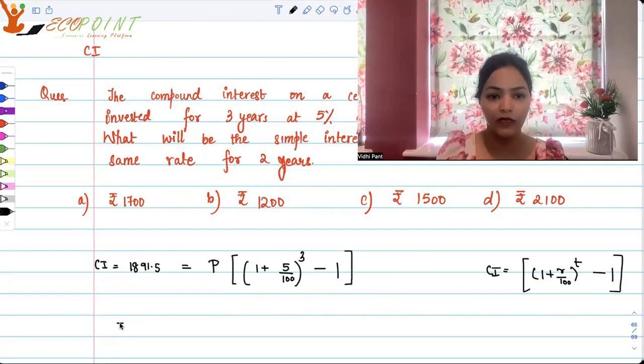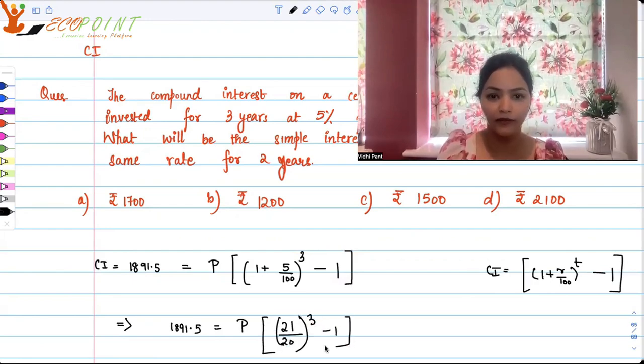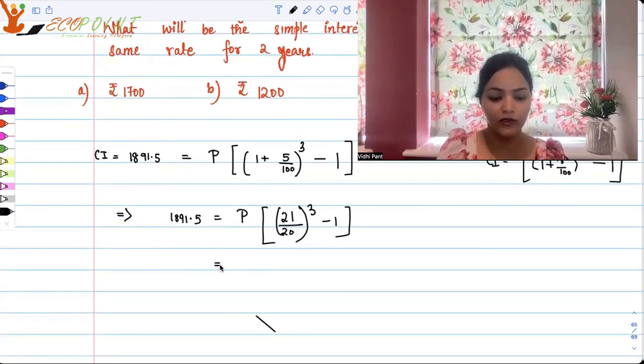Now this means that 1891.5 is equal to P multiplied by 1 upon 20. So 21 upon 20 cubed minus 1, which is equal to